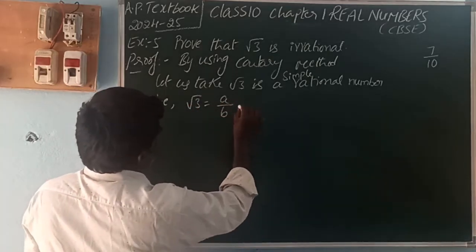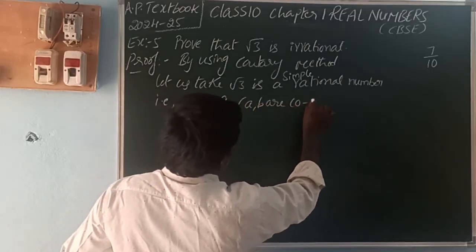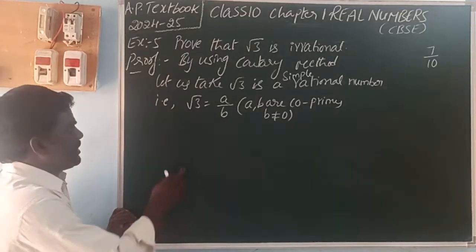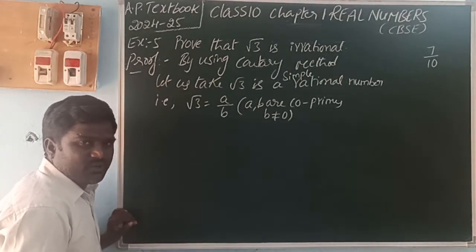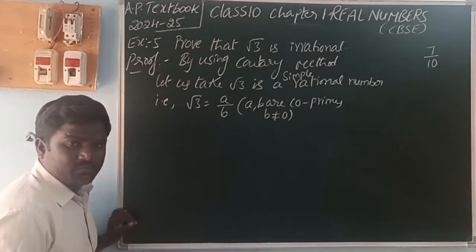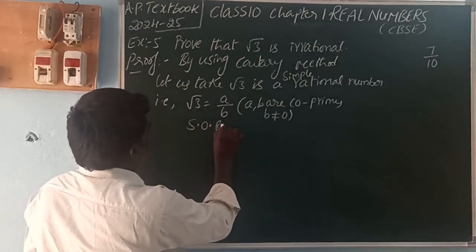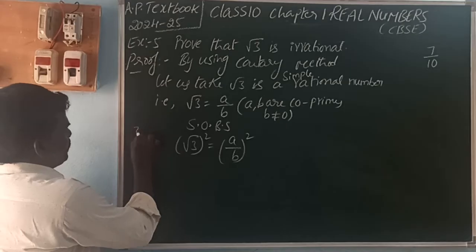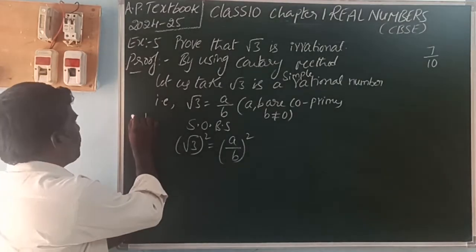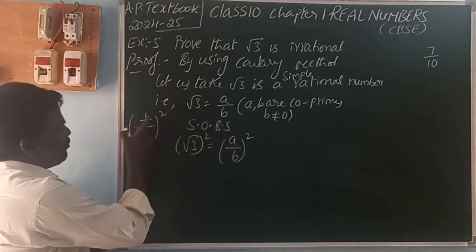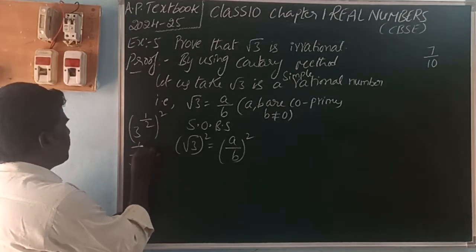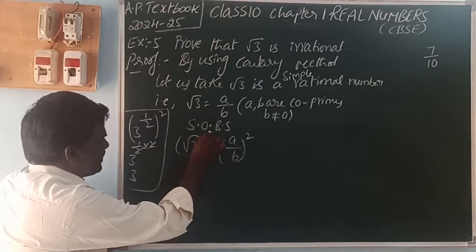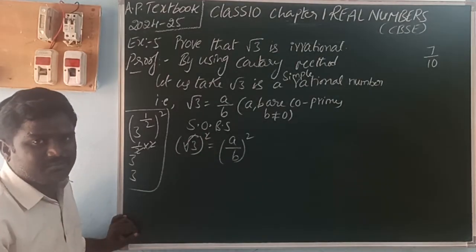Here a and b are co-primes, b is not equal to zero. On the left side there is a square root — square root means the exponent is one by two. To remove the square root, we square both sides. Square root of three whole squared equals a by b whole squared. Using the formula (a^m)^n = a^(m×n), three to the power one-half times two gives three. So the left side becomes simply 3.